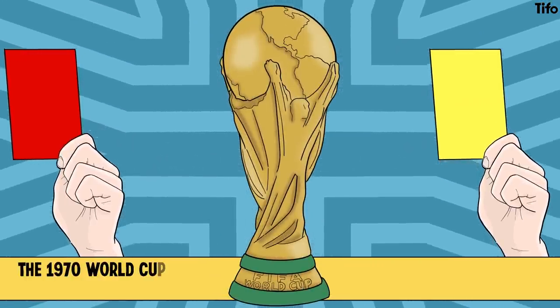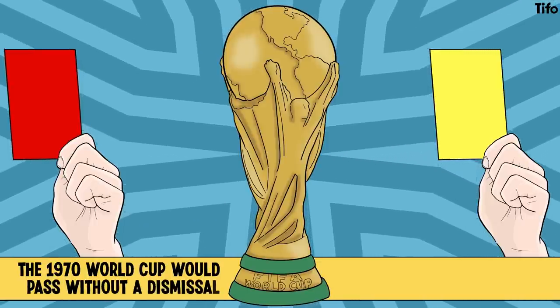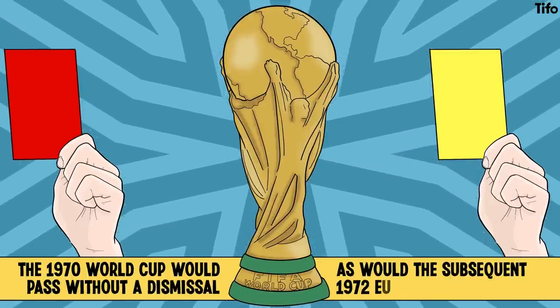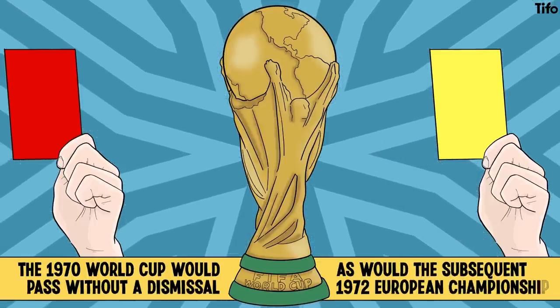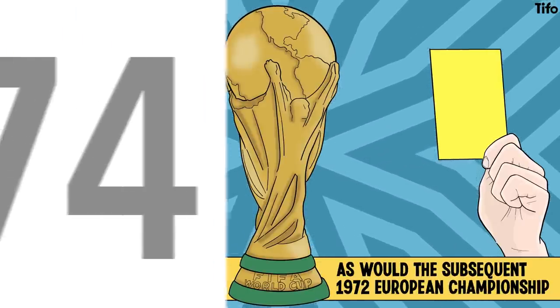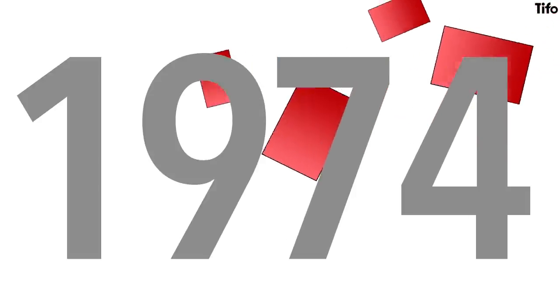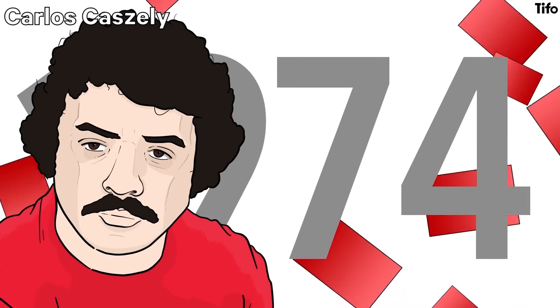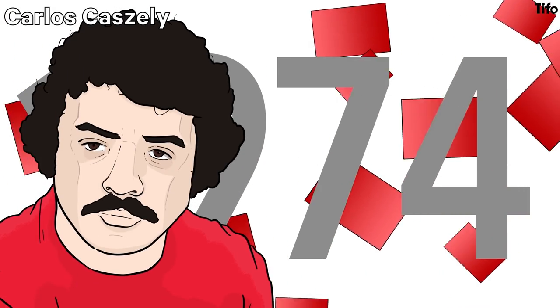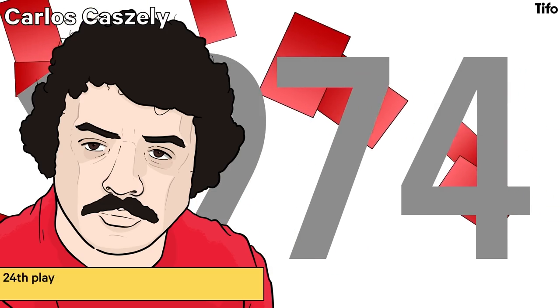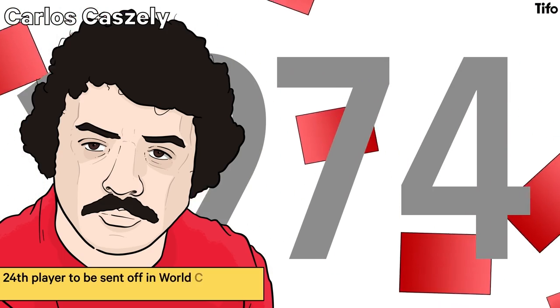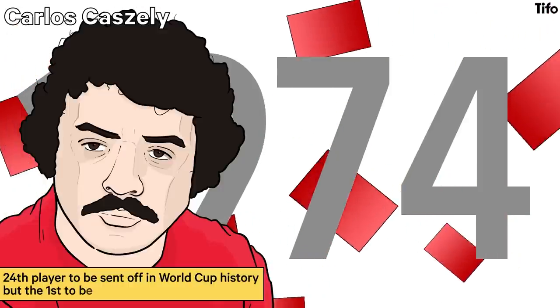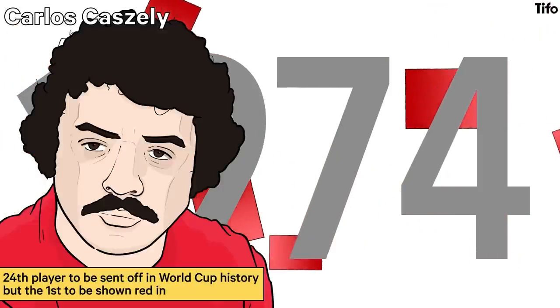That World Cup would, however, pass without a dismissal, as would the 1972 European Championship. But in 1974, at the World Cup in West Germany, there was a rush of red cards — five would be shown in total. The first went to Chile's Carlos Caszely, who picked up a second yellow for a foul on Bertie Vogts. Caszely became the 24th player to be sent off in World Cup history, but the first to be shown a red card in the process.